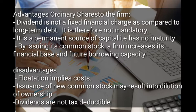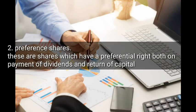Issuance of new common stock may result in dilution of ownership. When you have many shareholders, many people have control over the business, so there is dilution of ownership of the firm. Another disadvantage is that dividends paid to ordinary shareholders are not tax deductible, so taxes are charged on dividends.